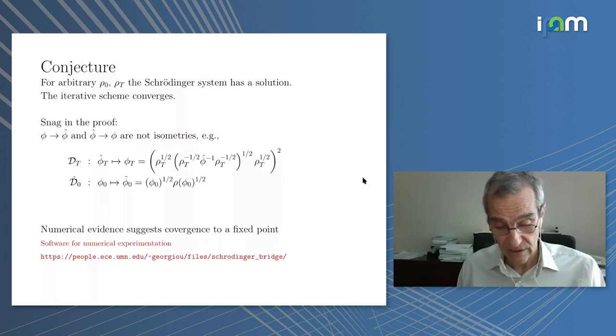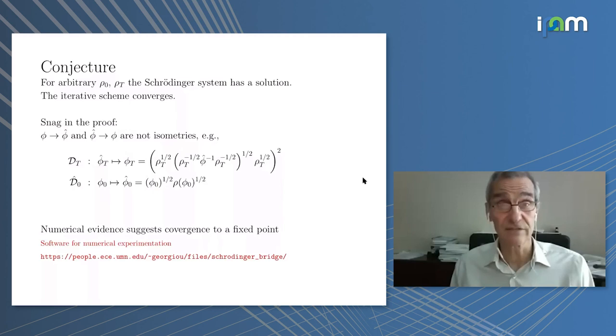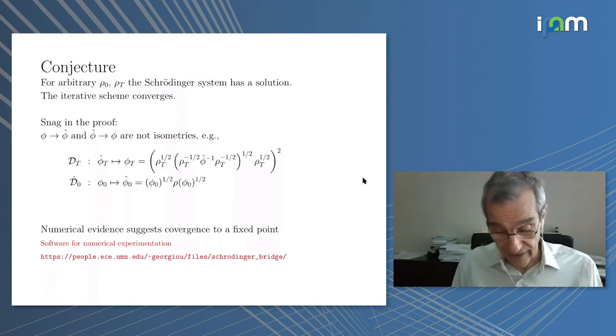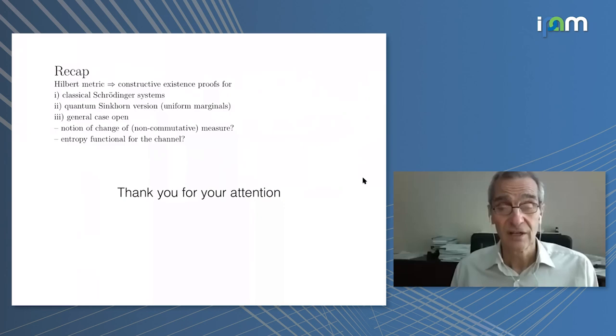For the general case we don't have a proof that the Schrödinger system converges. The snag in our early proof is that the division becomes very complicated due to non-commutativity and they are no longer isometries. However, numerical evidence suggests that convergence, extensive experimentation shows that the system always converges. In fact, which is very interesting, convergence occurs even if you have different types of non-commutative multiplications at the two ends, which of course requires different interpretation.